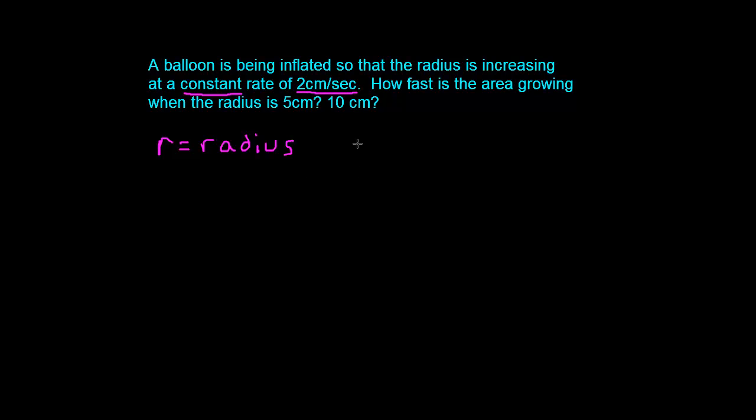Okay, that's the rate of change of the radius. In other words, dr/dt, the rate of change of the radius with respect to the rate of change of time. Okay, and this is equal to 2 centimeters per second.